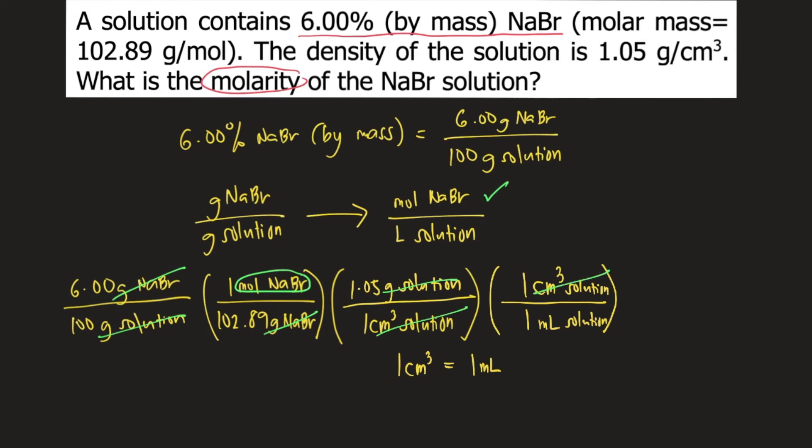We are left with mL of solution at the bottom. And finally, we know that 1,000 mL is equal to 1 liter. 1,000 mL of solution is equal to 1 liter of the solution. So mL would cancel, and our unit at the bottom is liter solution.